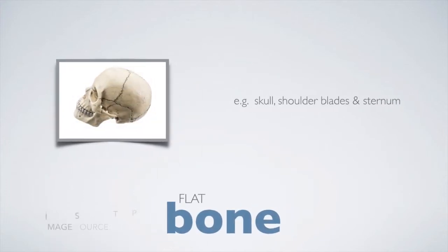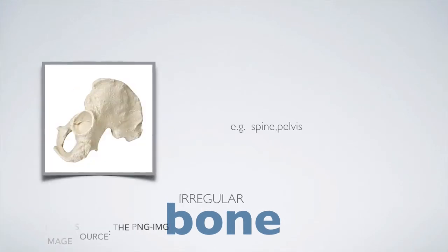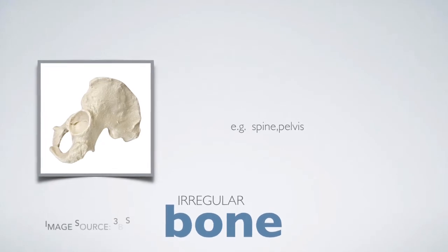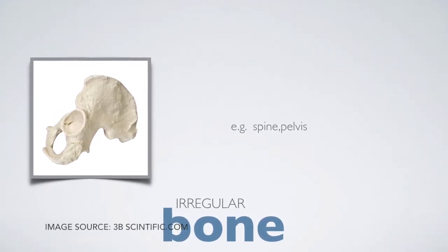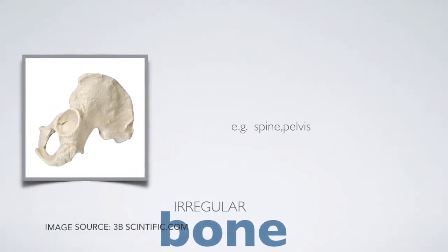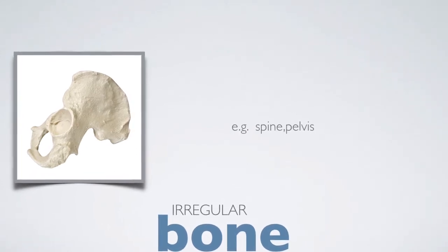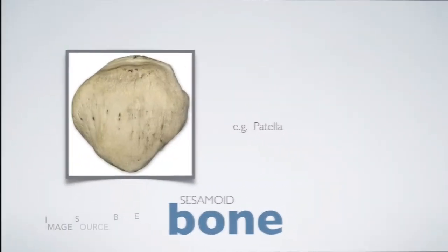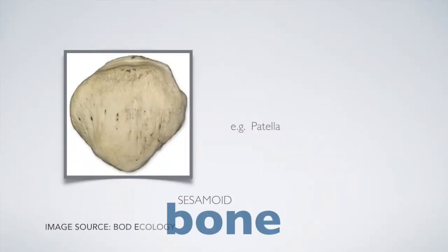Flat bones are found in the skull, shoulder blades, and sternum. Irregular bones are irregular in shape — bones of the spine and pelvis are examples. Bones that are embedded in tendons, acting to hold the tendon away from the joint, are called sesamoid bones. The patella, or kneecap, is an example of a sesamoid bone.